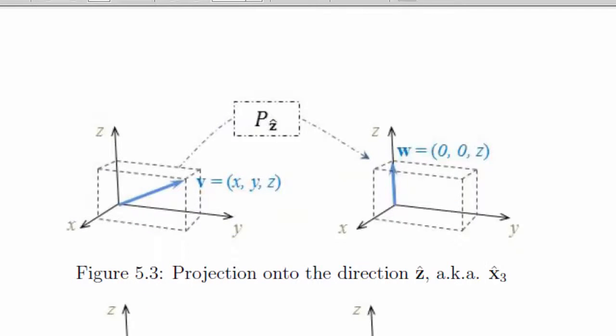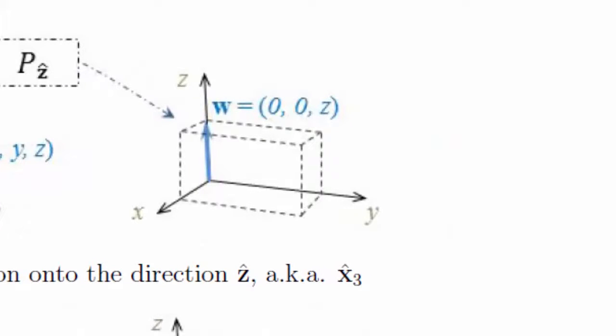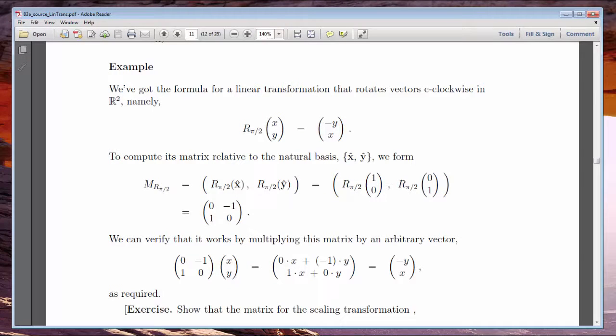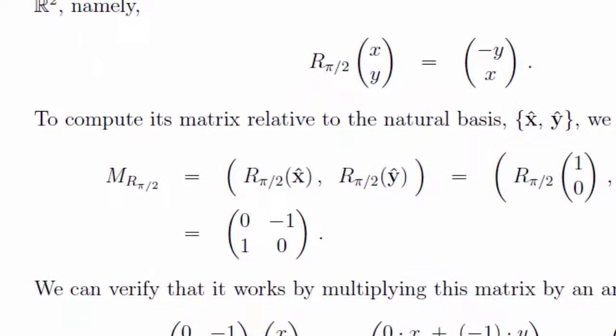Here's an operator in R3 that takes any vector and projects it along the z-axis. That's basically nothing more than squishing the x and y coordinates to zero, but leaving the z-coordinate alone. Every one of these linear operators has a matrix associated with it, and there's a very nice technique that lets us turn a loose verbal description, like rotates counter-clockwise by pi over 2, into a precise matrix that we can use to compute.